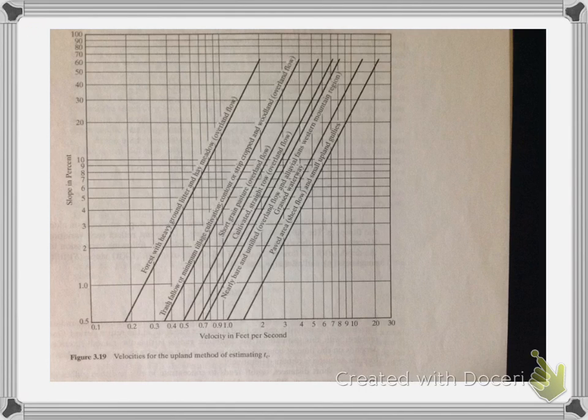Another way to calculate travel time is based on the graph on figure 3.19 in your textbook. Once you know the slope of your watershed and the various surface types, you can actually determine the overall watershed.